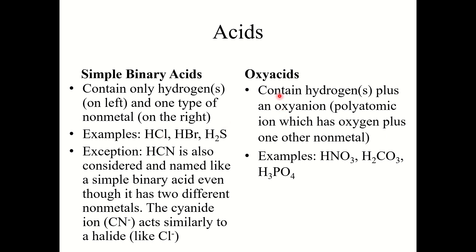Oxy acids are a bit easier to spot — they too contain hydrogen on the left side, but the big difference is they contain oxyanions. Oxyanions are polyatomic ions that have oxygen plus one other nonmetal. So HNO3, H2CO3, H3PO4 — these are all examples of oxy acids.